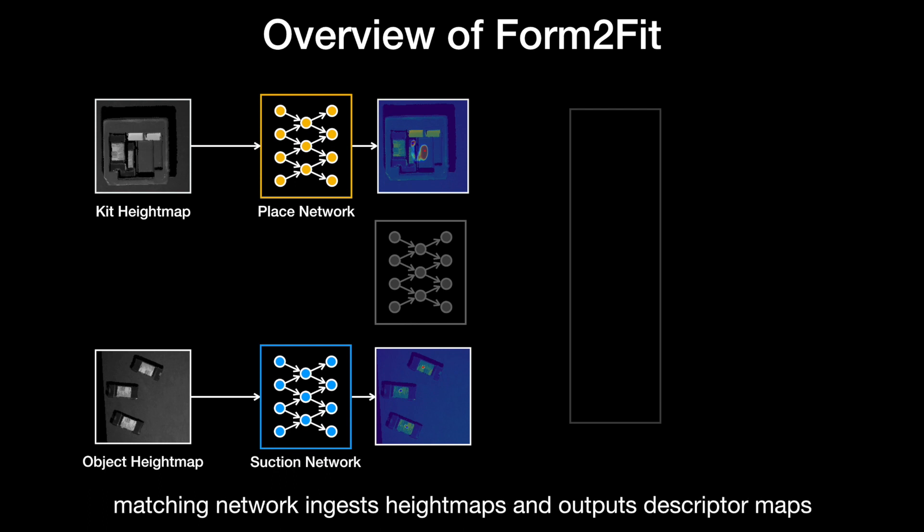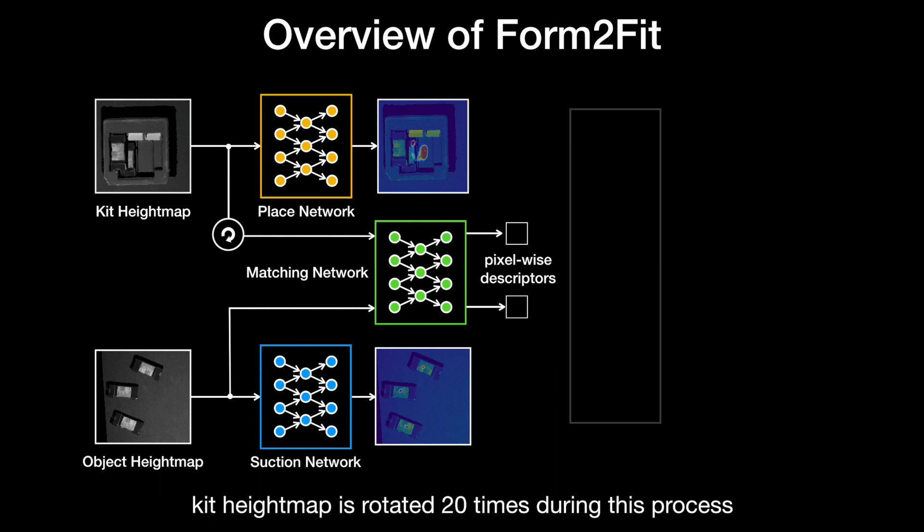In parallel, the kit height map is rotated 20 times and fed to the matching module, which embeds it into a descriptor space of size 64. It also ingests the object height map and embeds it into that same descriptor space.